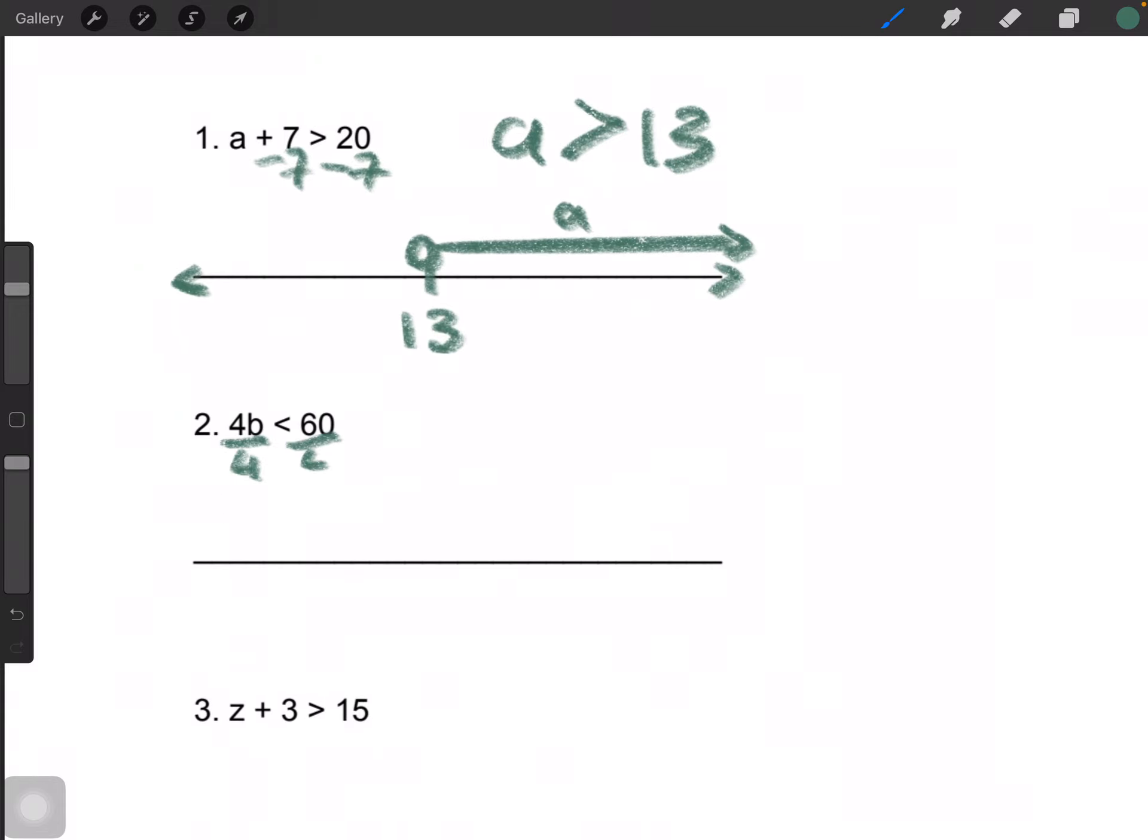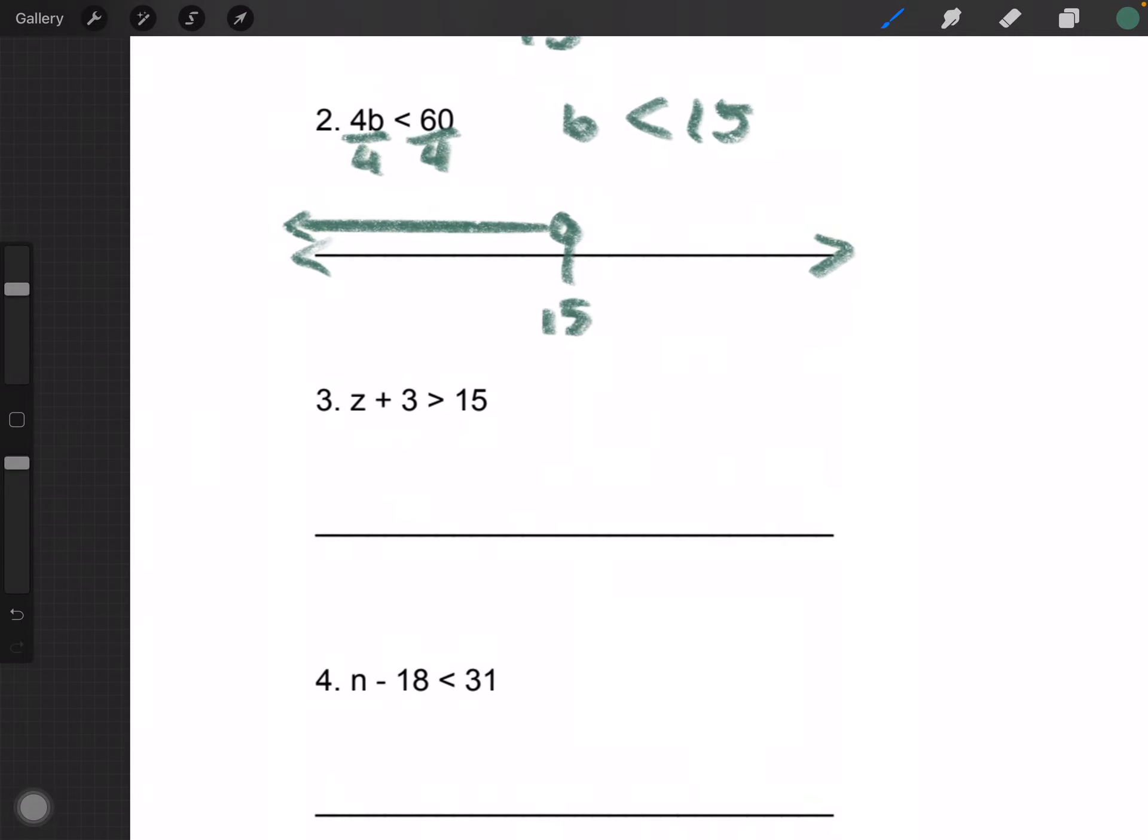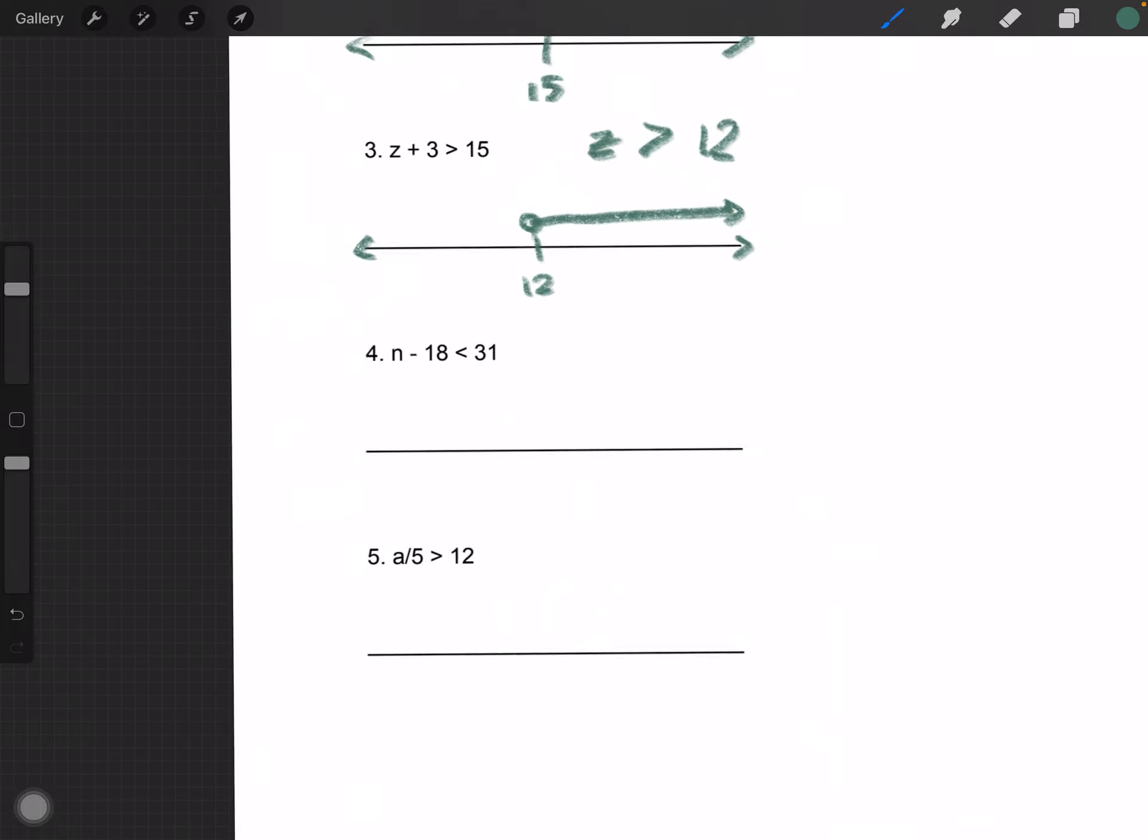Same here. Divided by 4 on both sides, B is less than 15. We do 15 here. B with an open dot pointing this way. And this one, you do minus 3, so Z would be greater than 12. And so forth.